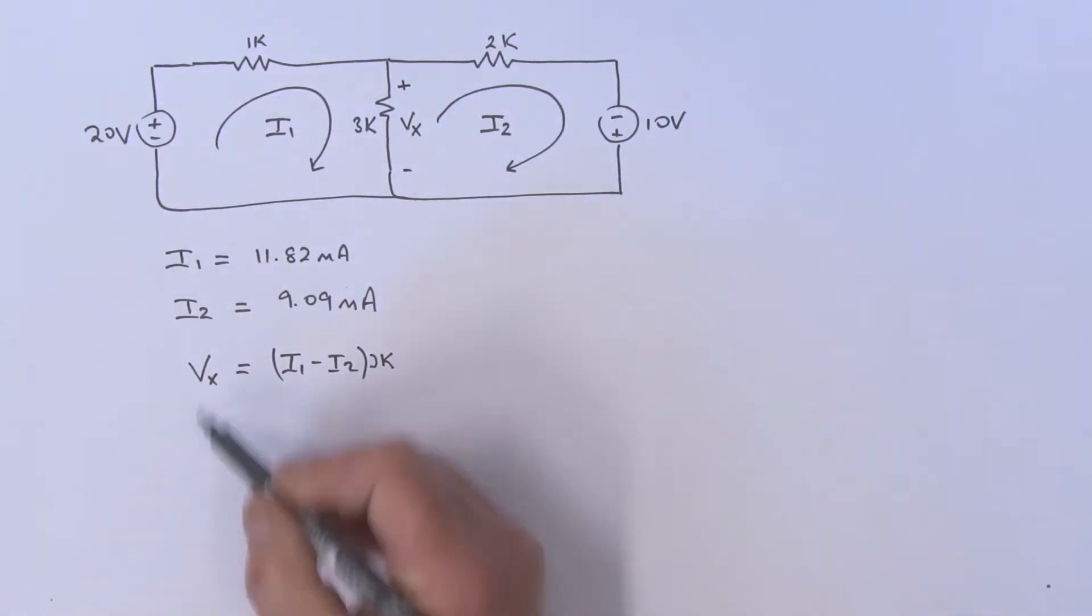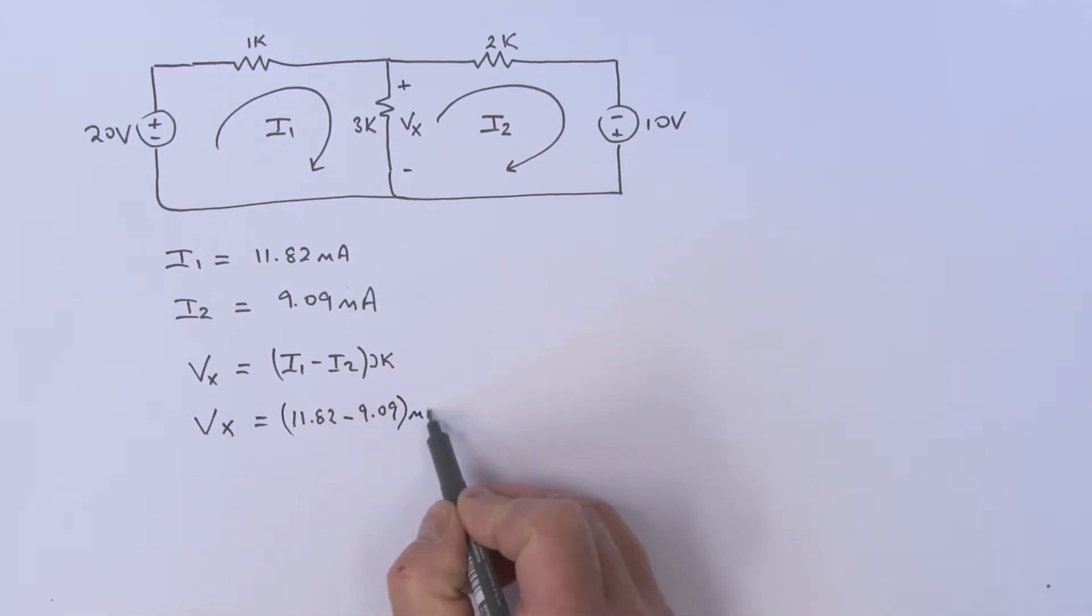So if we go ahead and do this, we can say Vx equals 11.82 minus 9.09 milliamps, multiplied by 3k. That equals 2.73 milliamps times 3k, which gives me Vx being 8.19 volts. And you can say, well, no worries there.